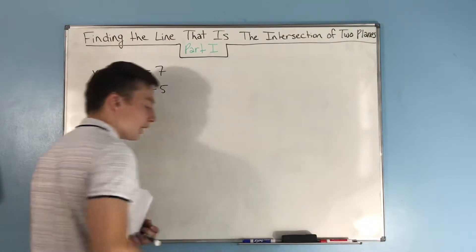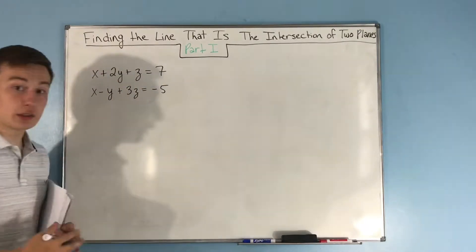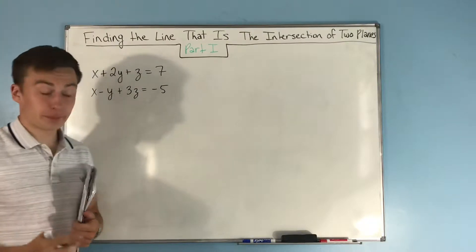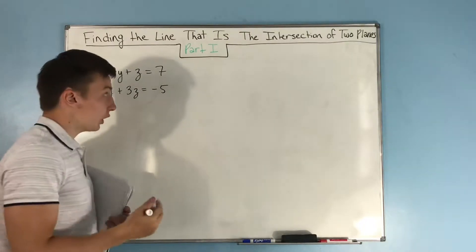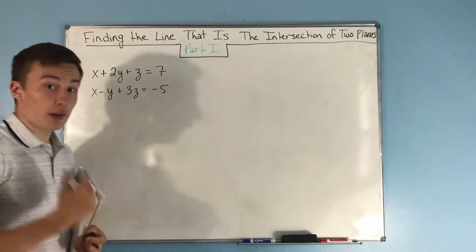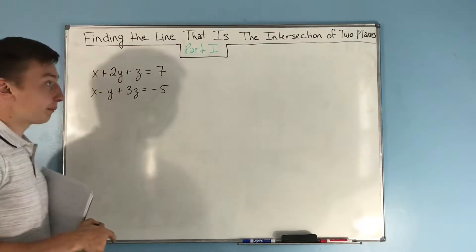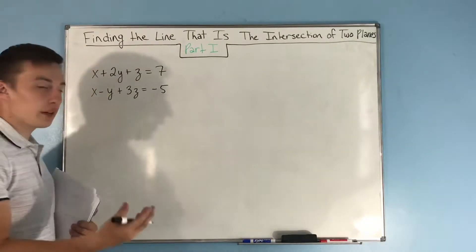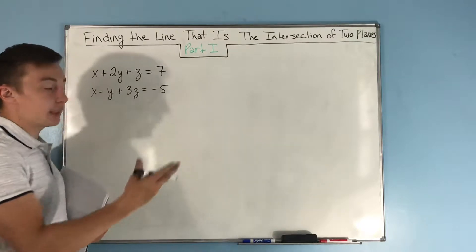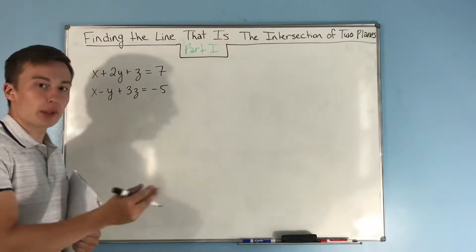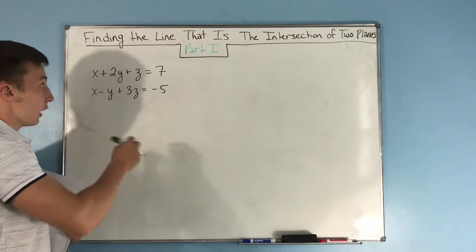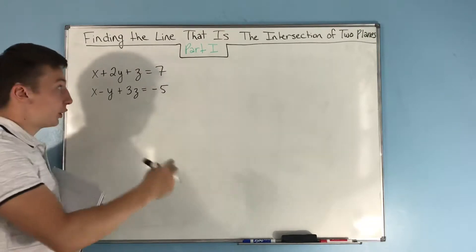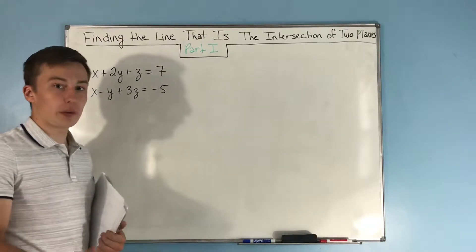What do we need to find the equation of a line? We need a point and we need the direction of the line. So the first thing we can do is find the point — a point on this line. This is where the two planes are intersecting; they're forming a line. So if we can find a single point out of the infinite points where these two planes intersect, then we're golden.